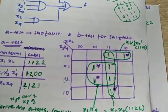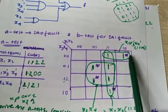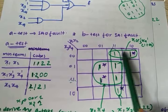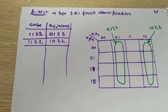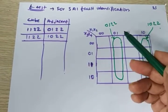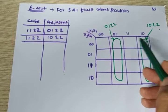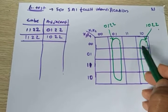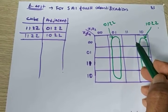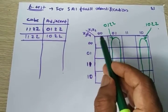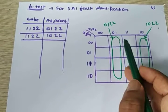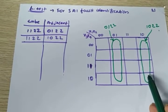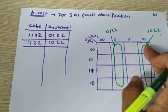The next cube is 1·2·0·0. See — 1·2·0·0. This is our original cube. We need to find out the adjacent cubes of this cube. If you fold the K-map, you may have a group here, another adjacent group here, a group here, or a group here. This is our original cube and we need to find all its adjacent cubes.